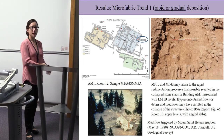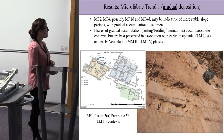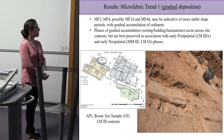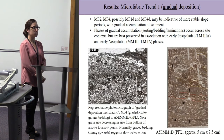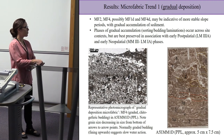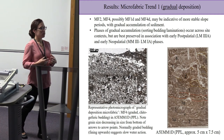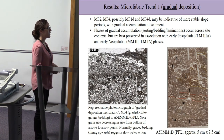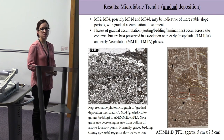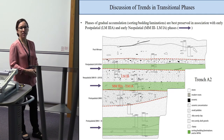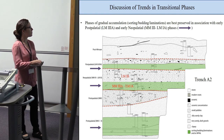In contrast, gradual deposition is shown in building AP1. The representative photomicrograph shows much more sorted sediment in normally graded bedding with multiple layers visible — something deposited by water. These gradual deposition fabrics are best preserved in early postpalatial and early neopalatial phases, meaning at the beginning of these phases. When mapped into trench A2 as a complete profile, these gradual accumulations are seen occurring at the beginning of each phase.